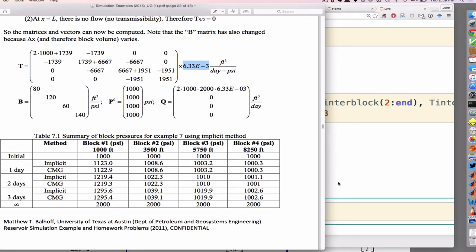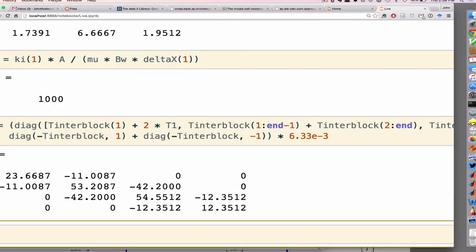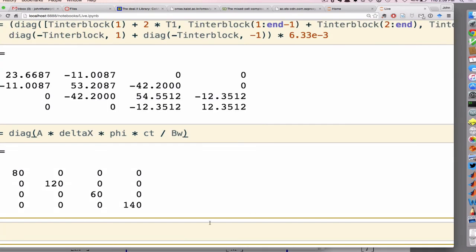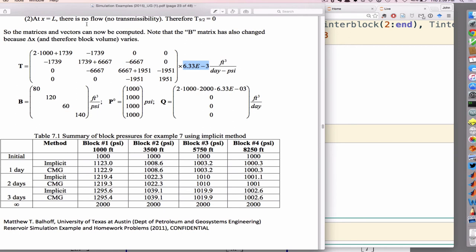So then B is pretty easy. B is just a diagonal matrix so I'm just going to use the diag command again, and it's just A times delta X times phi times CT over BW. Looks right: 80, 120, 60, 140.